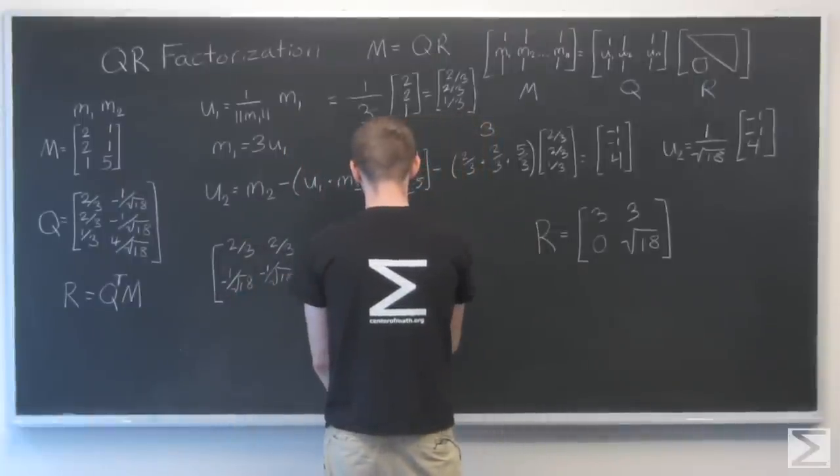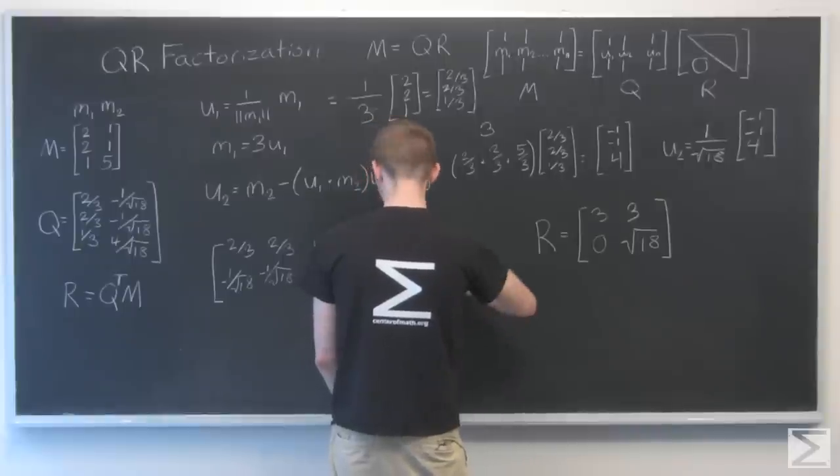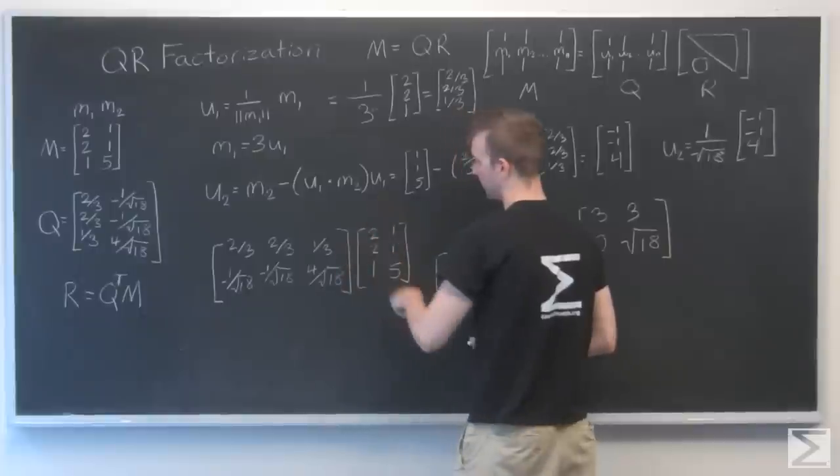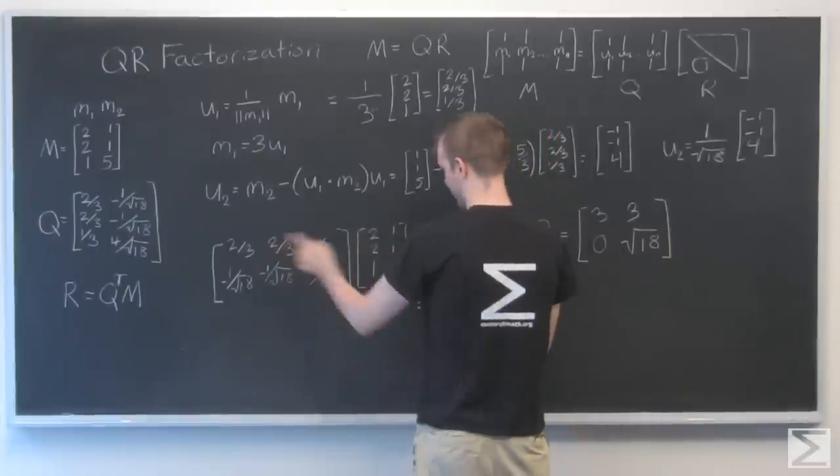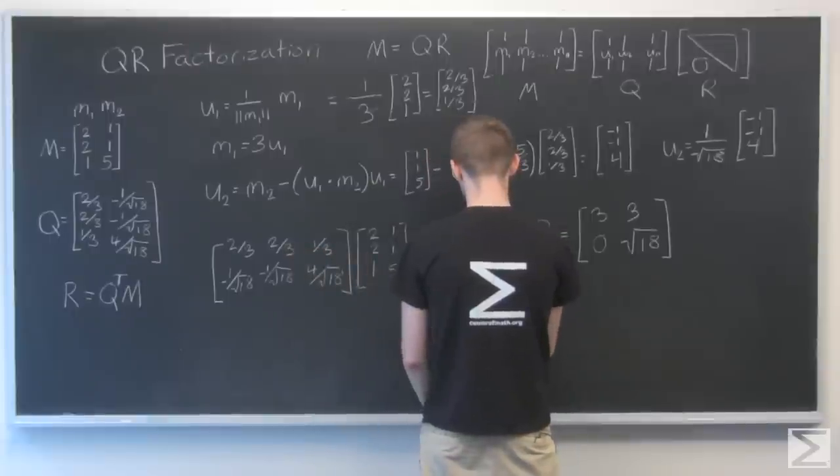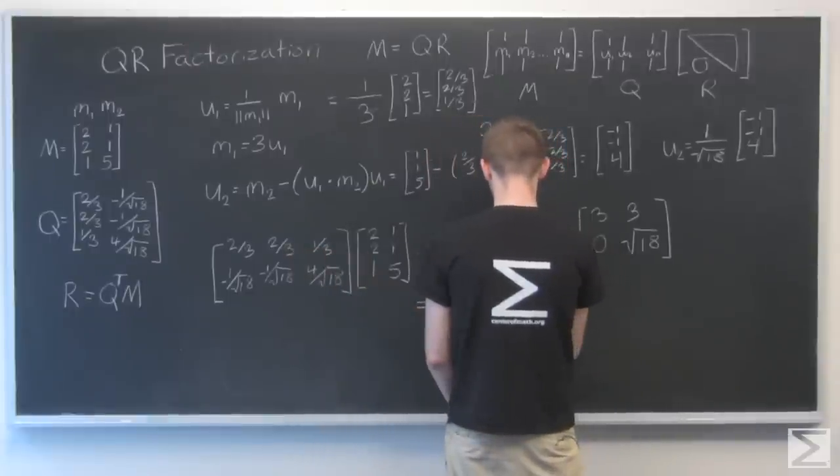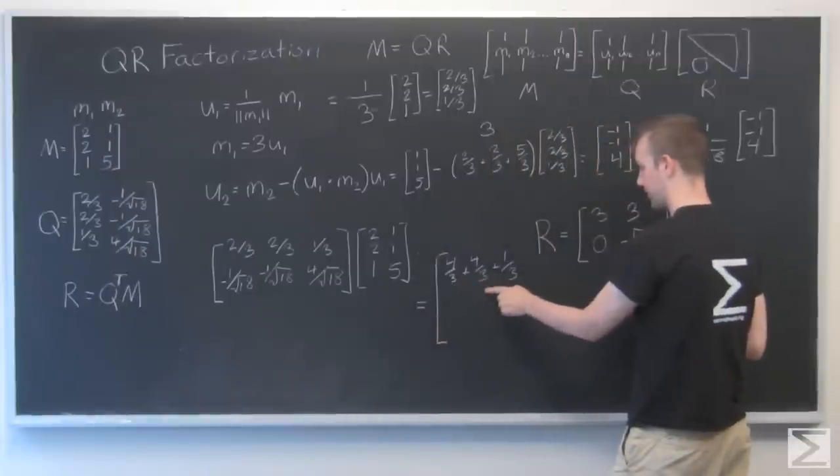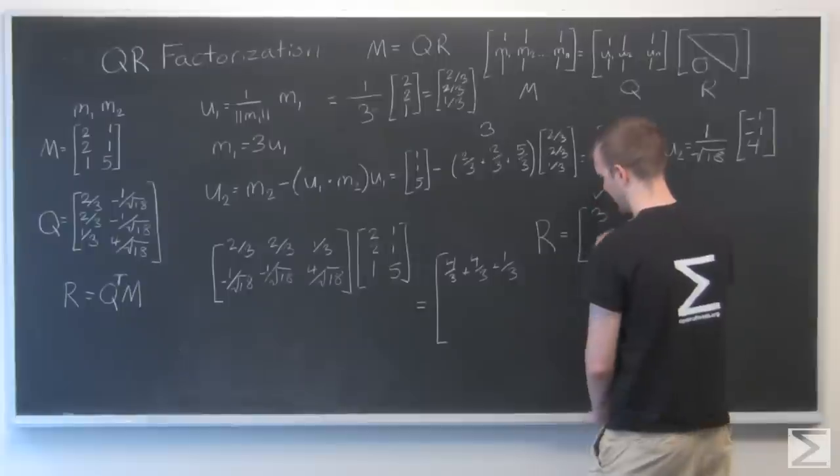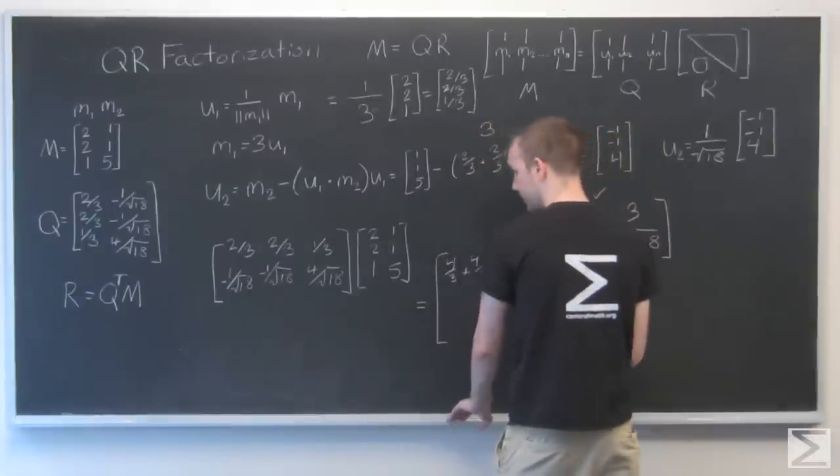That multiplied by my original M, [2, 2, 1] and [1, 1, 5] equals... row, column, let's go. So 2/3 times 2, 4/3, 2/3 times 2, 4/3, 1/3 times 1, 1/3. So 4/3 plus 4/3 plus 1/3. Hey, that's 9/3, that's 3.